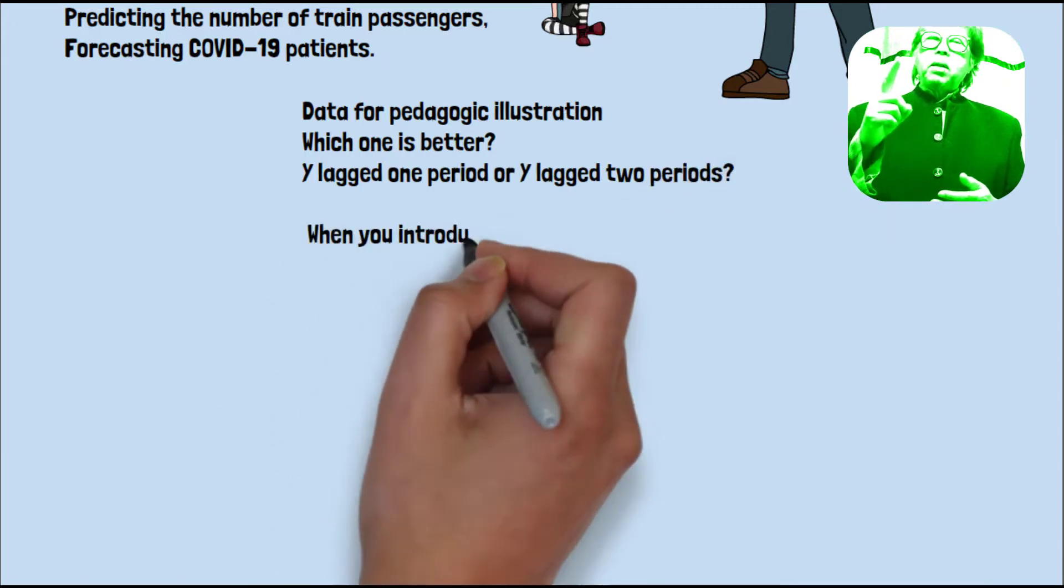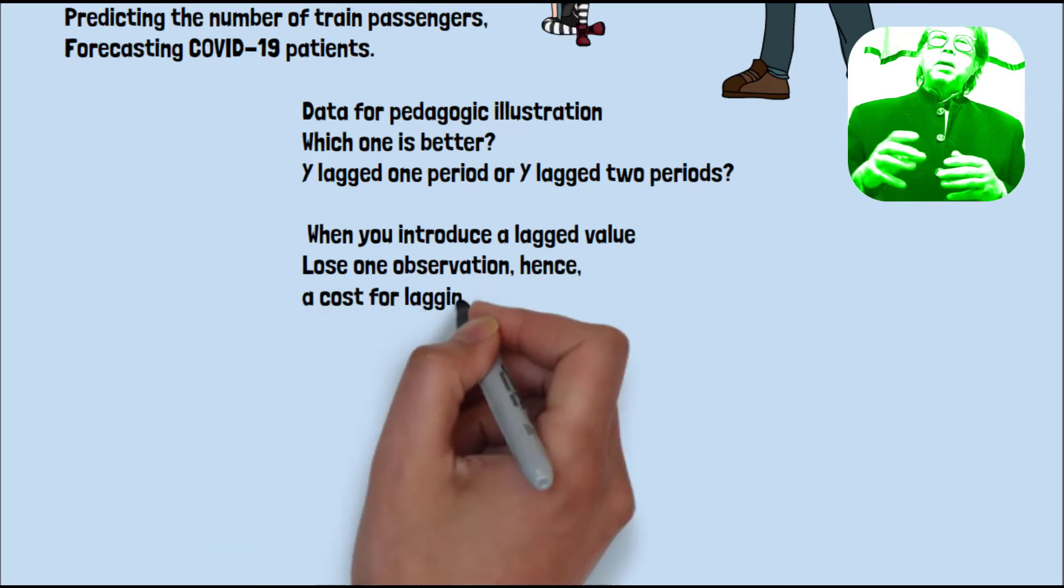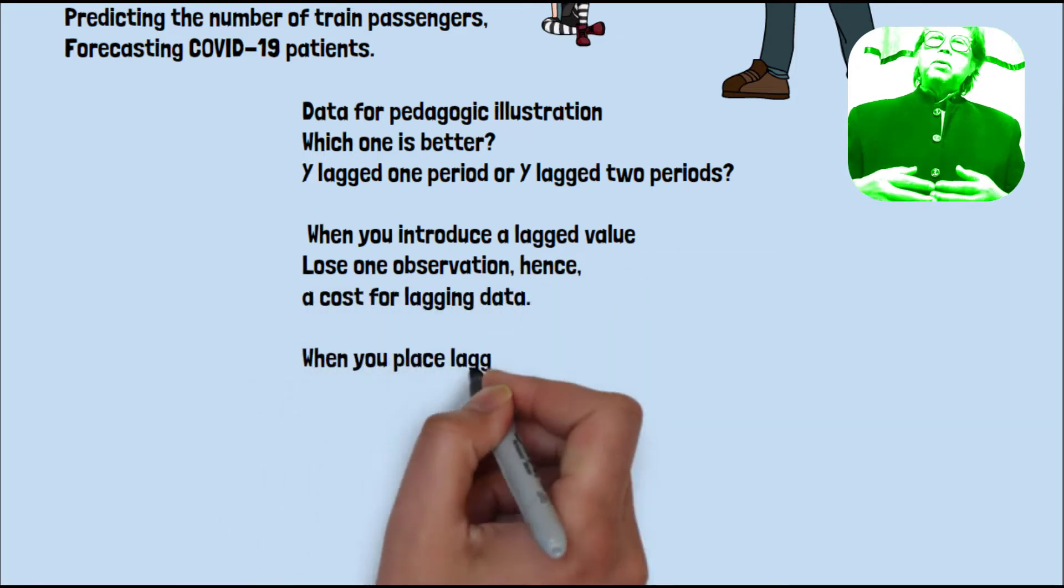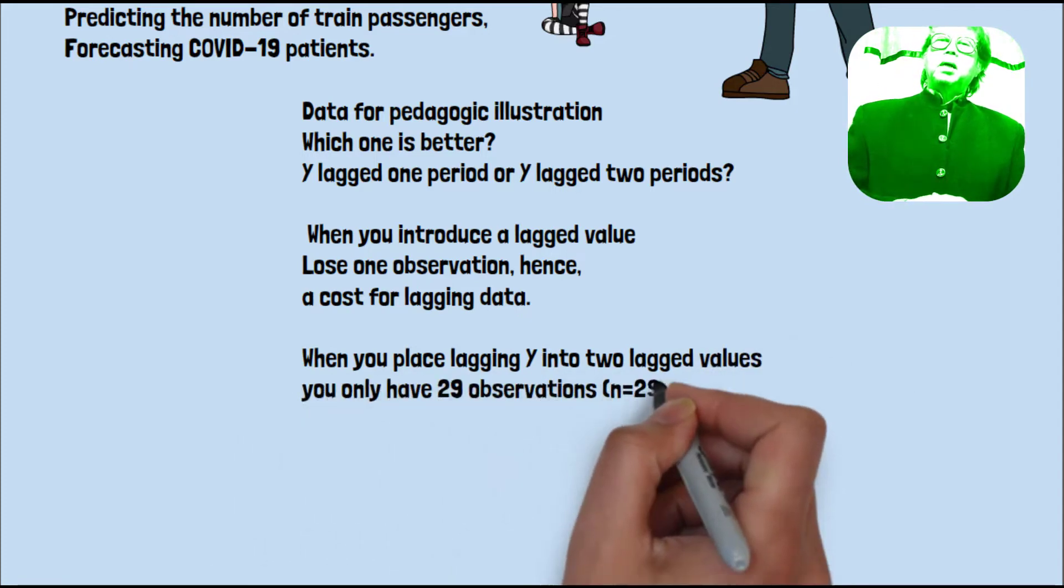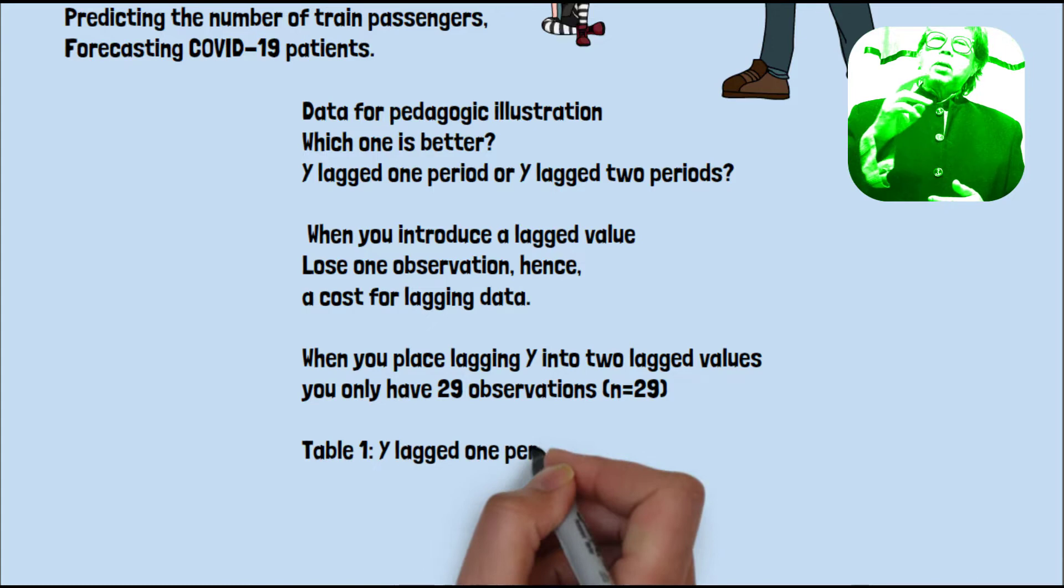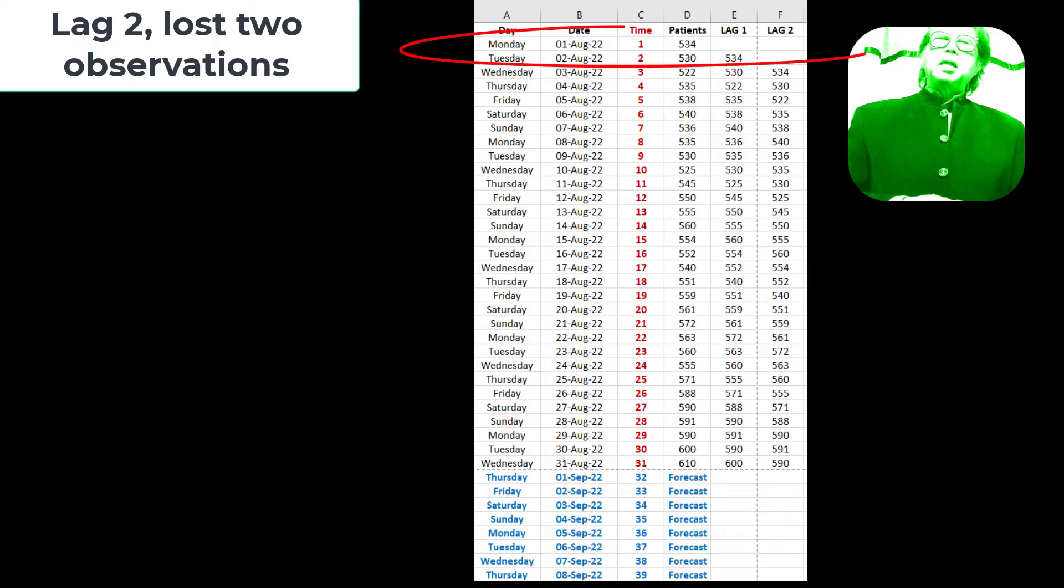Y lag one period or Y lag two periods in table 1 below? Remember, when you introduce a lag period, you lose one observation. Two periods, you lose another two observations. There is a cost for lagging data. For example, when you press lagging Y to lag value, you only have 29 observations. See table 1, Y lag one period and lag two periods.